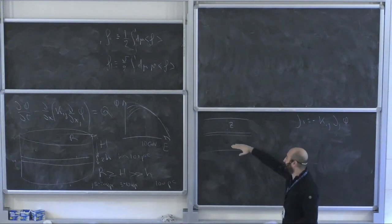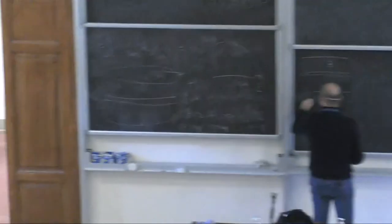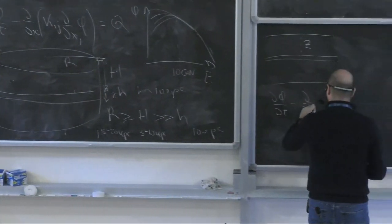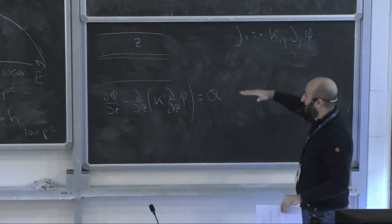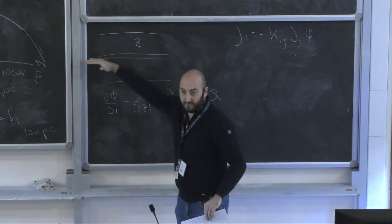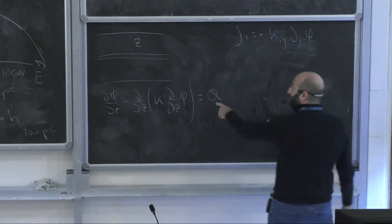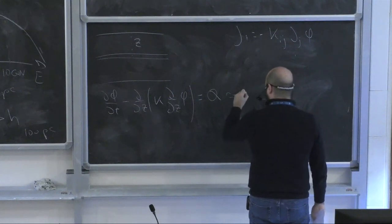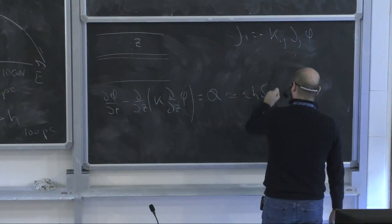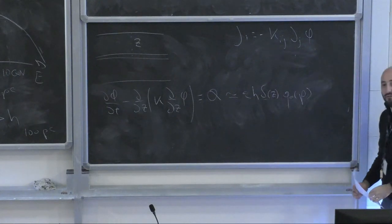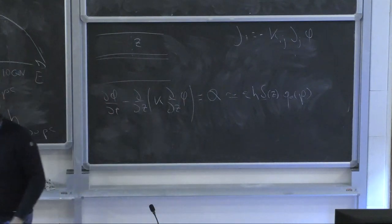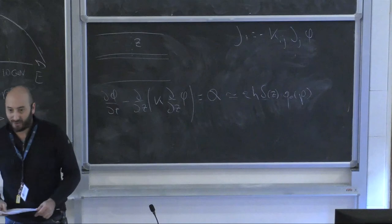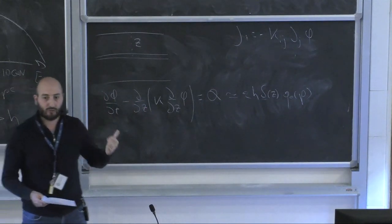Sometimes a 1D approximation is used where only z, the height above the galactic plane, matters. The simplified diffusion equation becomes: ∂φ/∂t − ∂/∂z [κ ∂φ/∂z] = Q, where sources are approximated as a Dirac delta function in z times the injection spectrum from acceleration theory. This simplified equation can be solved analytically, and exercises today will give you an idea of how the solution looks like.